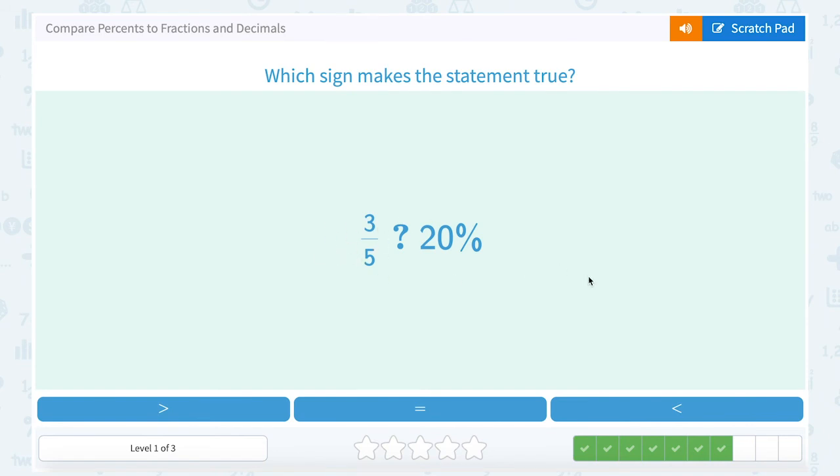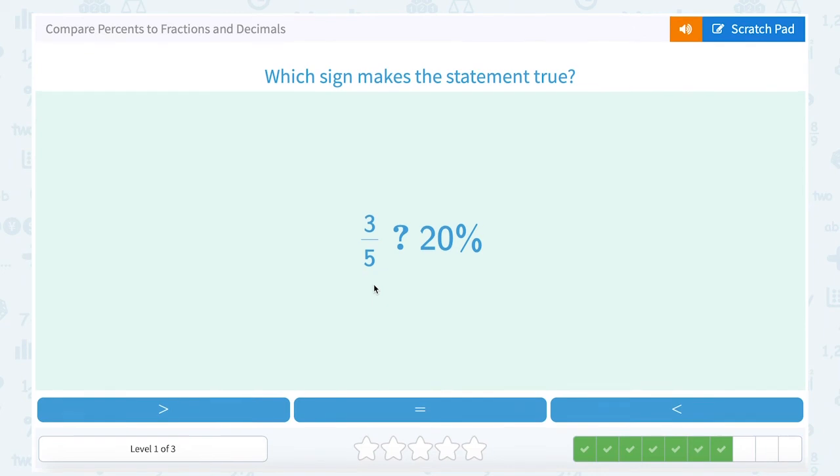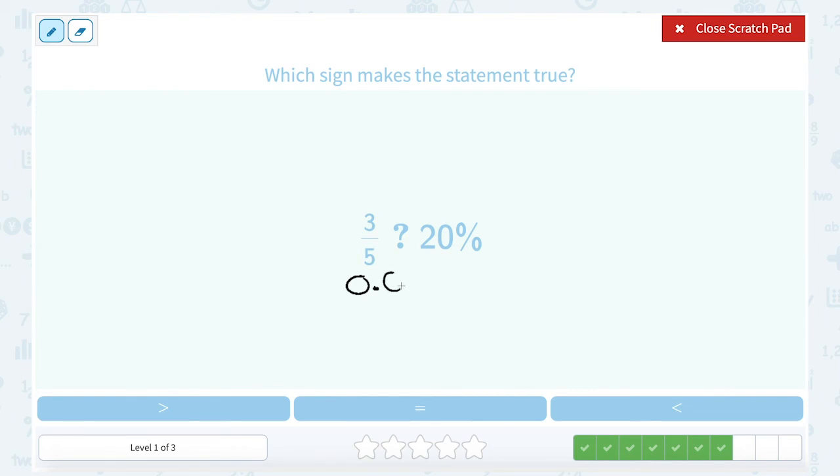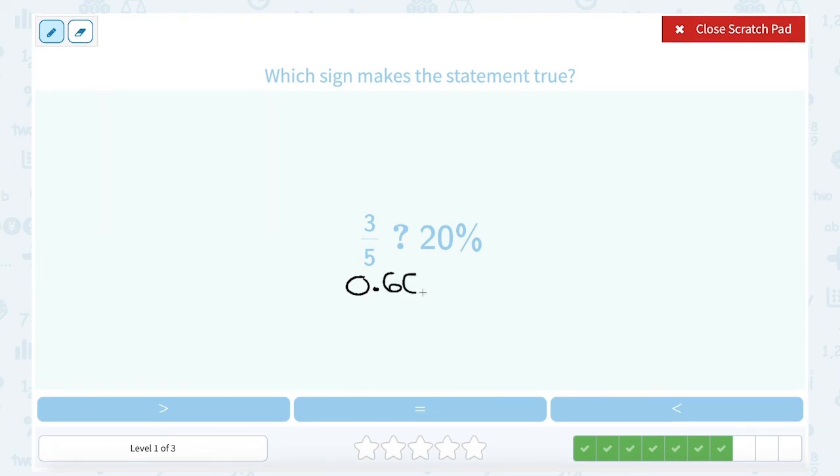So if I want to take 3 fifths and turn it into a percent, the first thing I would do is divide it to get my decimal number. Remember, fractions mean the same thing as division. Fractions are always the top divided by the bottom. So I can say 3 divided by 5, which gives me 0.6. So that means, as a decimal, this is 0.6 or 0.60.